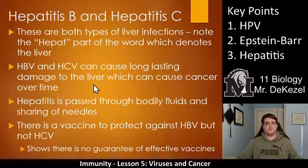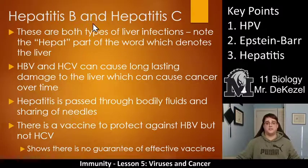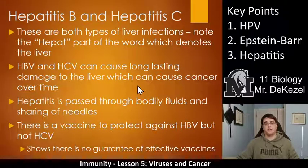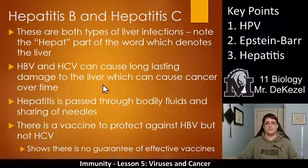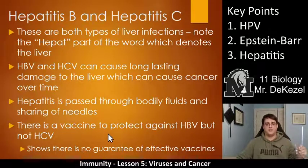Then we have hepatitis B and C, which are both types of liver infections. Note the "hepat" part of hepatitis — that denotes the liver, and "itis" means inflammation. So this is inflammation of the liver. Hepatitis C virus can cause long-lasting damage to the liver, which can cause cancer over time. If you get these viruses, they affect your liver and the DNA in your liver, and can cause liver cancer. Hepatitis is passed through bodily fluids and through the sharing of needles. There is a vaccine against hepatitis B, but not hepatitis C.